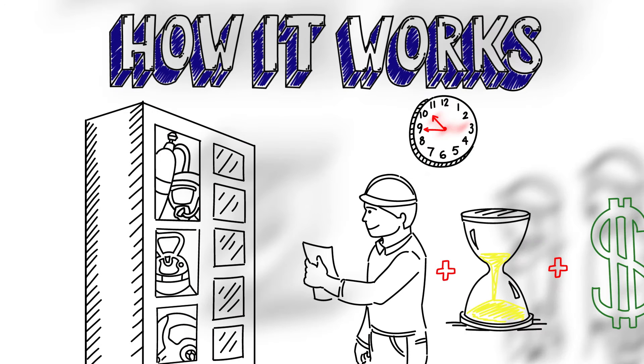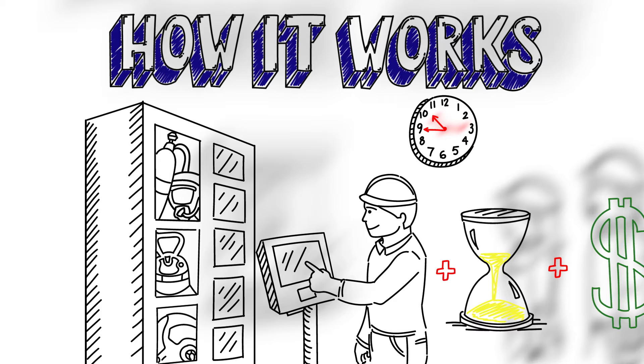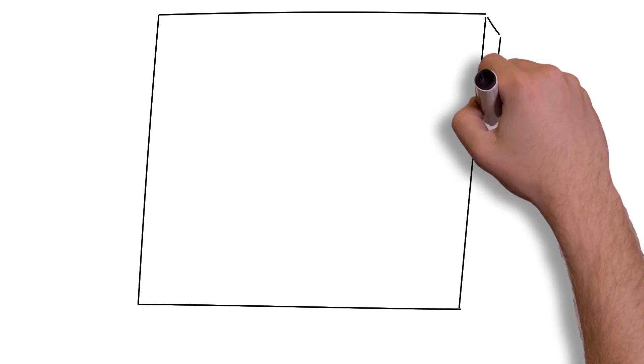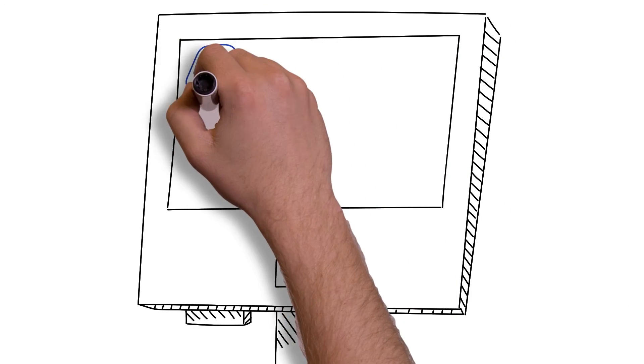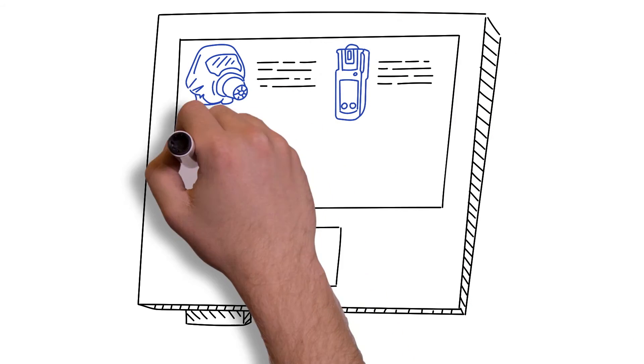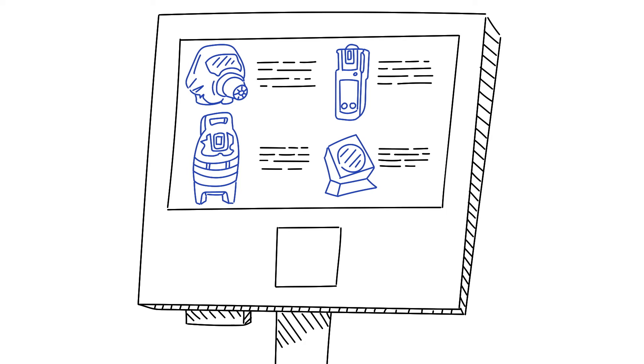Employees wishing to pick up their PPE can simply log in at the service station at any time using a barcode or radio frequency identification. Based on the respective user data, the Rental Robot identifies which products the employee can access and displays those devices on a screen. Optional information on the product's performance range can also be displayed.